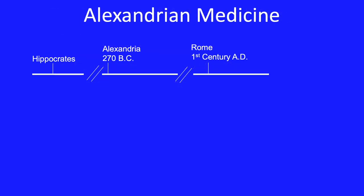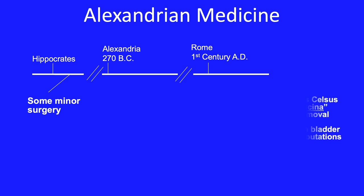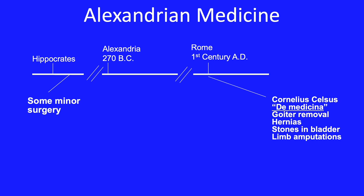Before discussing the anatomy of the heart, let me briefly mention some historical facts. I present a short timeline between Hippocrates, the father of medicine, and the Roman Empire of the first century AD. In the times of Hippocrates, only some minor surgeries were possible. By the time of the Romans, Cornelius Celsus published a textbook describing goiter removal, hernias, stones in the bladder, and how to perform a limb amputation.